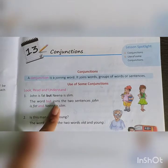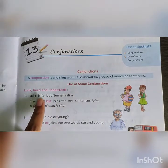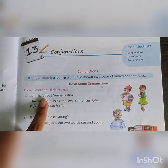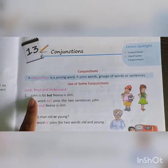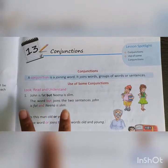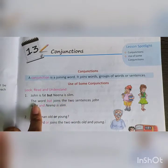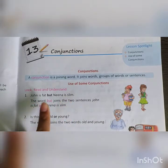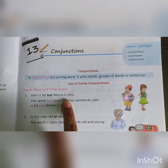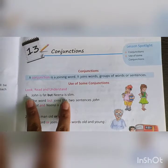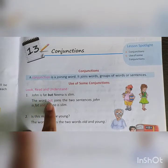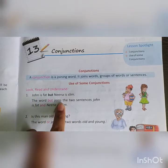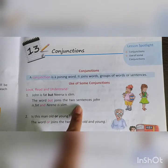Look, read and understand. John is fat, but Nina is slim. So children, these are two different sentences: John is fat, Nina is slim. And these two sentences have been joined by the word 'but'. The word 'but' joins the two sentences.